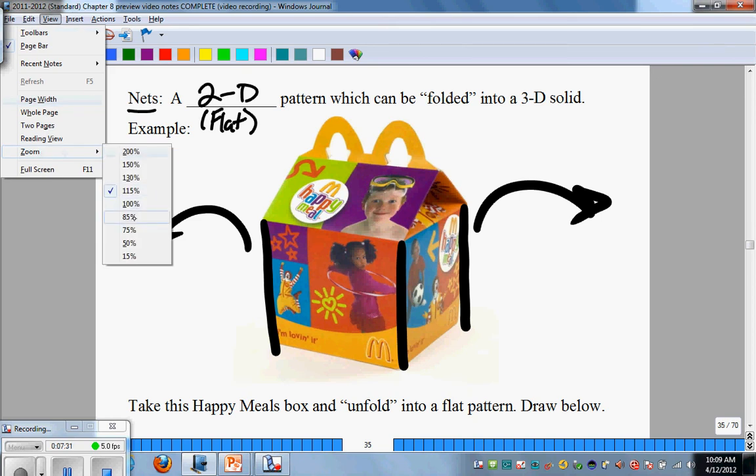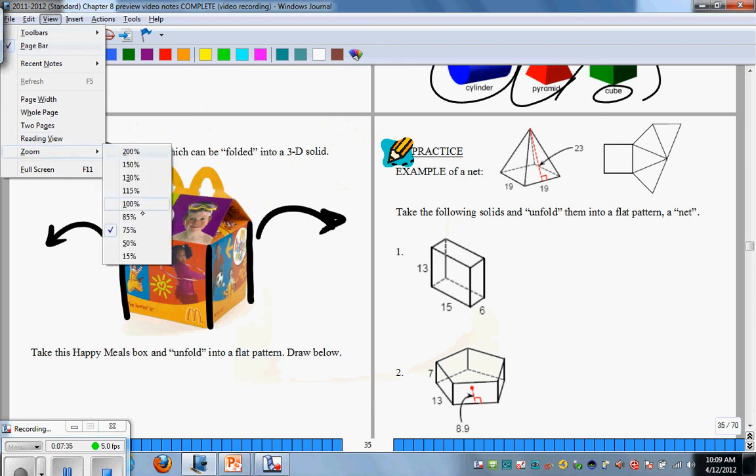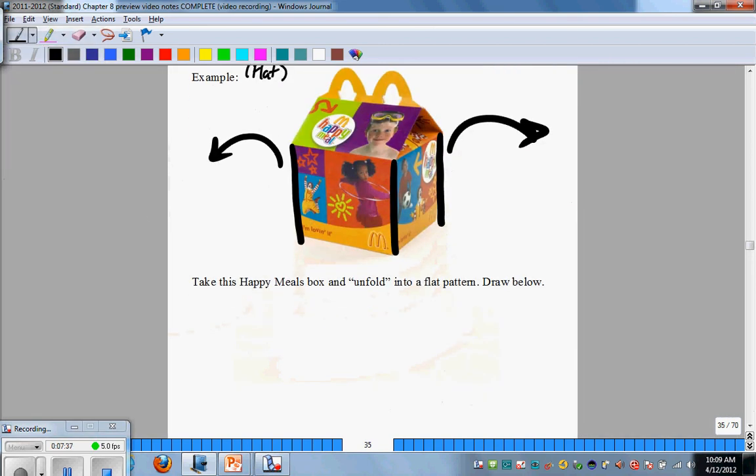What I'd like you to do is stop this video and attempt to draw that Happy Meal box as a net - unfold it into a flat image and see what you can come up with.